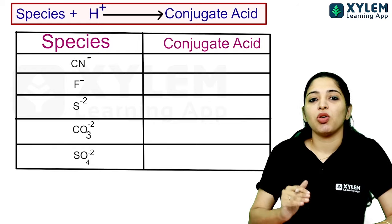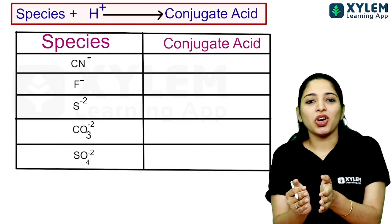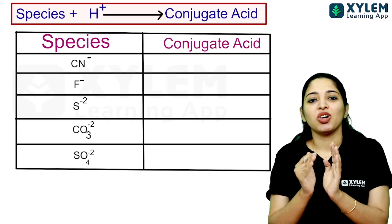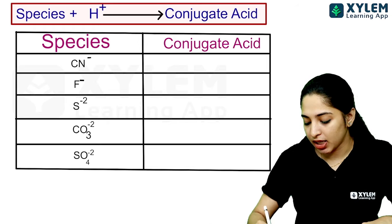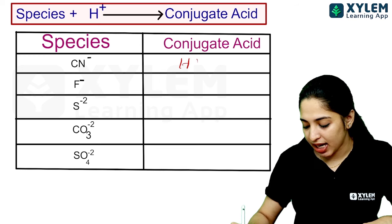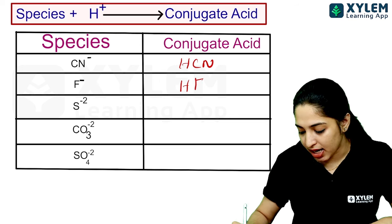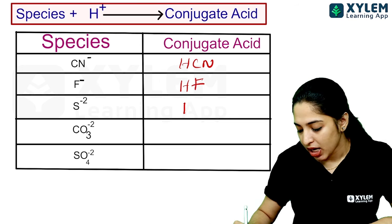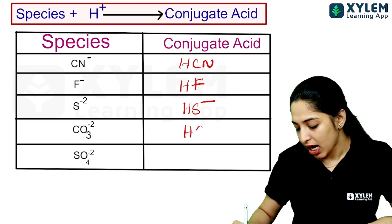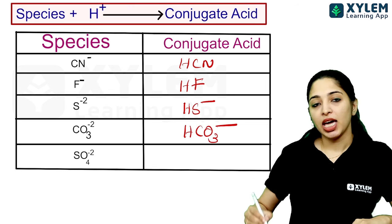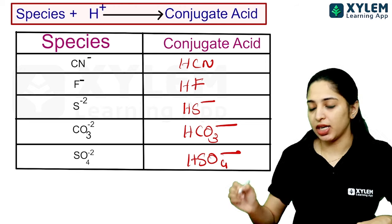Now let's find conjugate acids. If you add a proton to a species, you get the conjugate acid. CN minus plus H+ gives HCN. F minus gives HF. S2 minus gives HS minus. CO3 2 minus gives HCO3 minus. SO4 2 minus gives HSO4 minus.